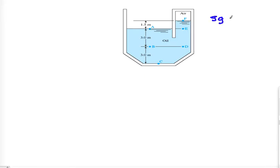The oil has a specific gravity of 0.9, sg of oil equals 0.9. We are asked to calculate the pressure at point A, B, C, D, E, and F. Let's go ahead and do the solution.